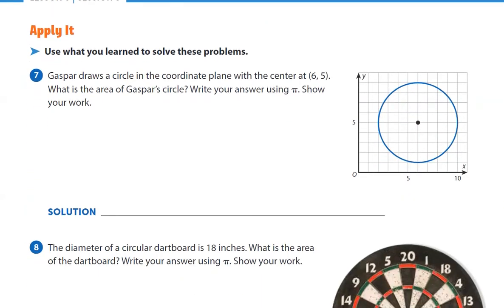Here's some practice. Gaspar draws a circle in the coordinate plane with a center of 6'5". What is the area of Gaspar's circle? Write your answer using pi. It doesn't matter what the center of the circle is. We just need to know the radius. So the radius is 1, 2, 3, 4. The radius is 4. So area equals pi times 4 squared. Counting is the hardest part of this scenario. We'll do it one more step. Area equals 4 squared is 16. So 16 pi.